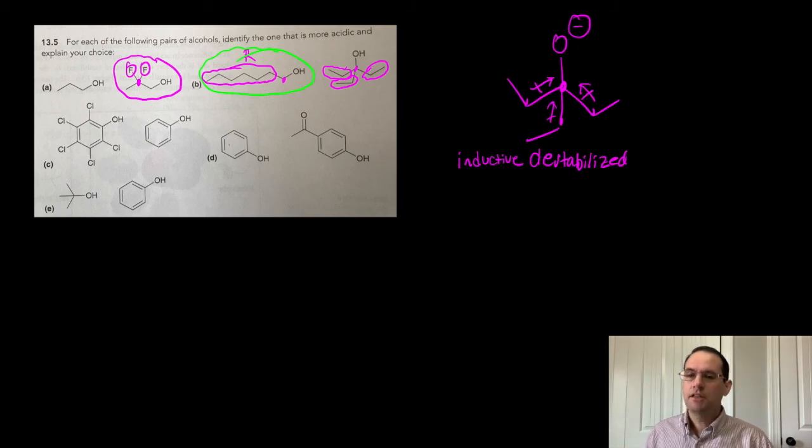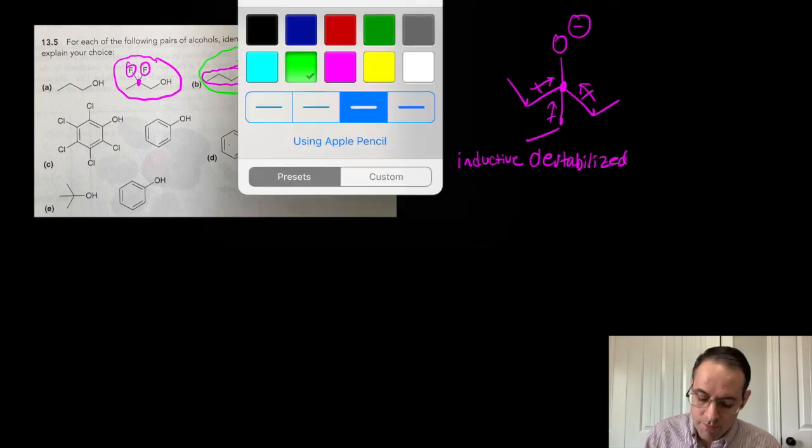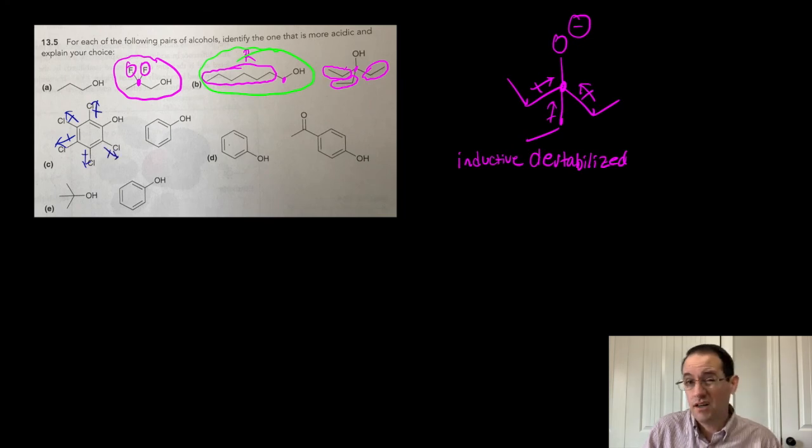Our next molecule here in part C is phenol versus pentachlorophenol. So what are these chlorine atoms doing? They're electronegative. They're pulling electron density away from the alkoxide or in this case, the phenoxide, which is not drawn. So the more acidic molecule is going to be the pentachlorophenol because the electronegative chlorine atoms are inductively stabilizing the conjugate base.